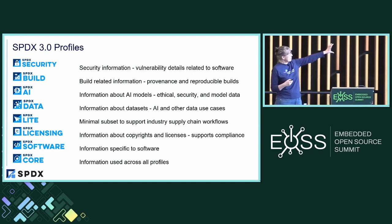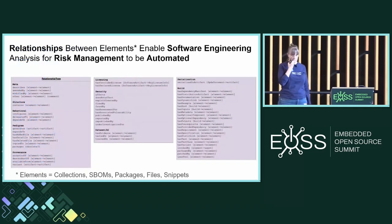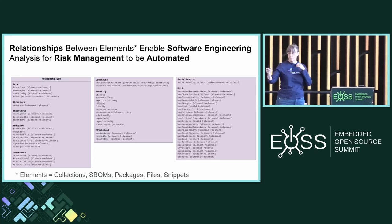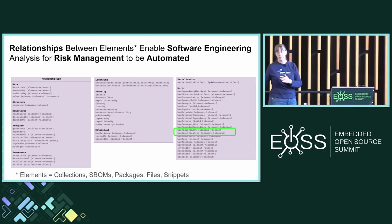In SPDX 3.0, we've got the core, software licensing in lite — that's what we had in 2.3 — and we added in AI, data, and build because in safety we have to understand how everything was built. Supply chain is critical, as well as security so we need to understand if there are known vulnerabilities. We have to connect these components, and in SPDX 3 we have a wide set of relationships for connecting one component to another. We had requirements and specifications in 2.3 and we're carrying it forward so we can hook the requirements in with the code, in with the tests, in with the evidence.